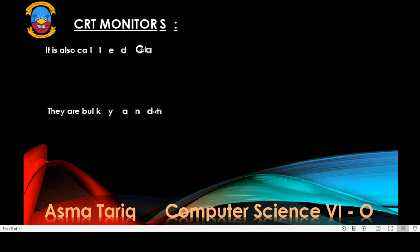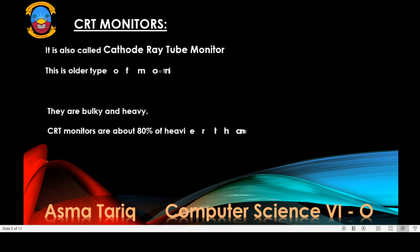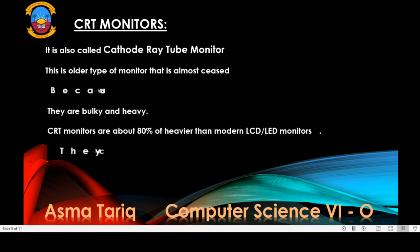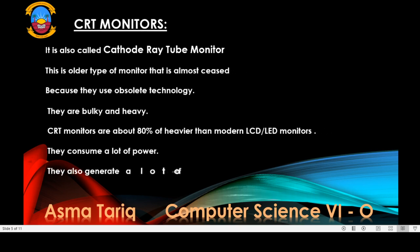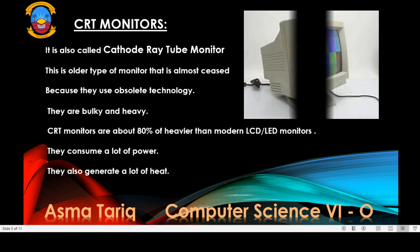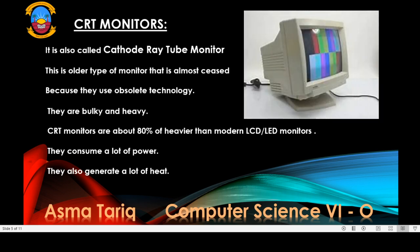In this lecture, we will discuss CRT monitors first. CRT monitors are also called Cathode Ray Tube monitors. This is an older type of monitor that is commonly seen because they use obsolete technology. They are bulky and heavy — CRT monitors are about 80% heavier than modern LCD and LED monitors. They consume a lot of power and also generate a lot of heat.